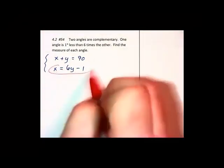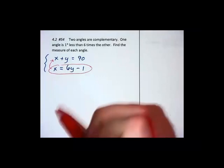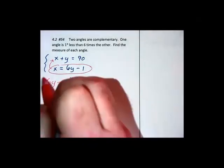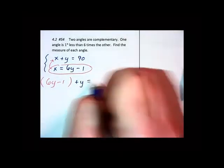We have an x equals, which means it's time for substitution. Substituting that into the line above gives me 6y minus 1, parentheses optional, plus y equals 90.